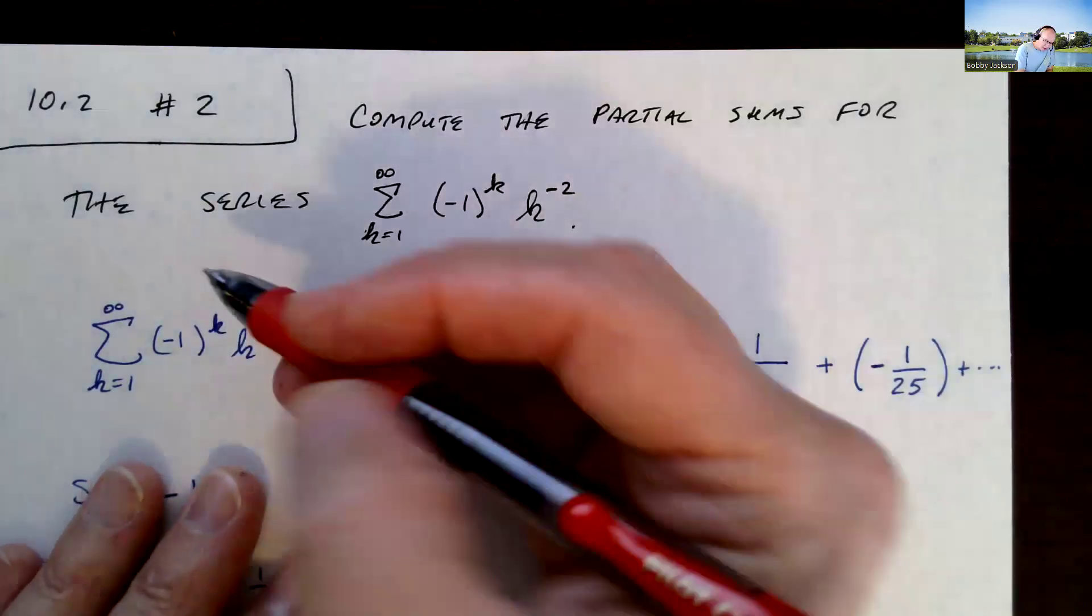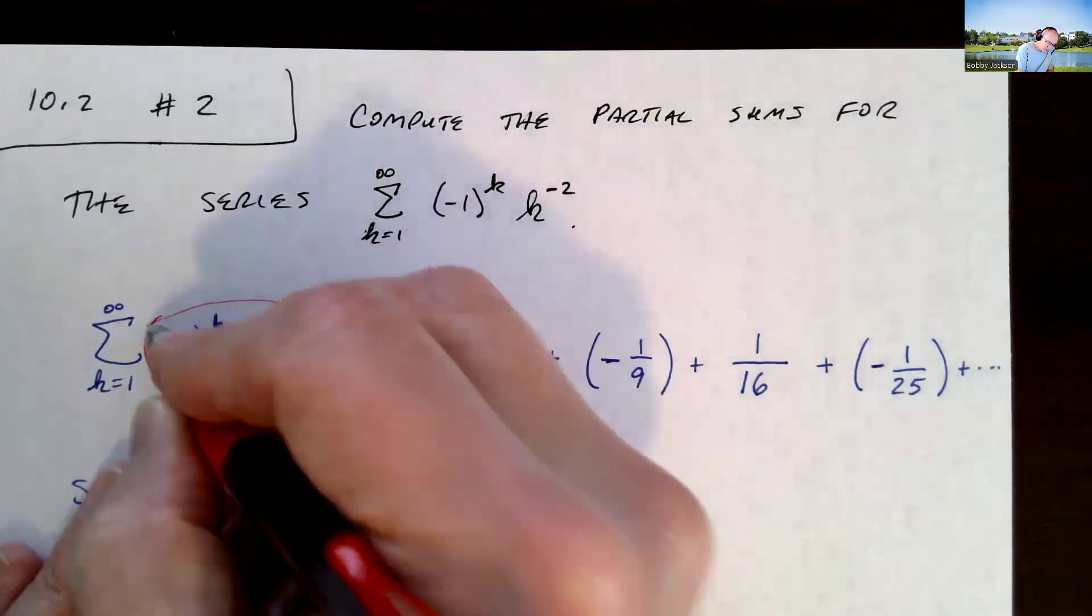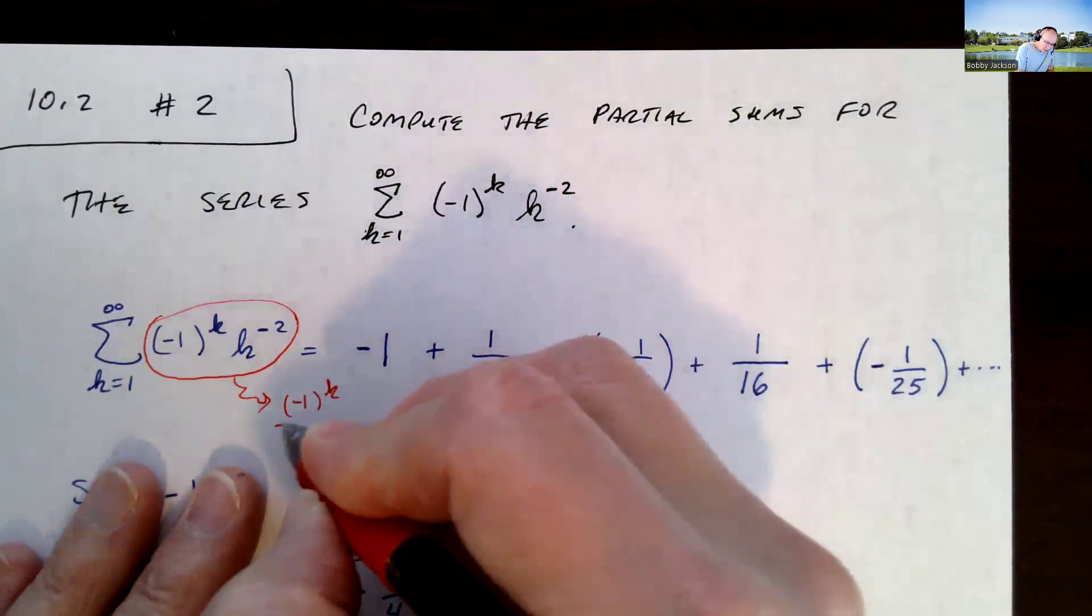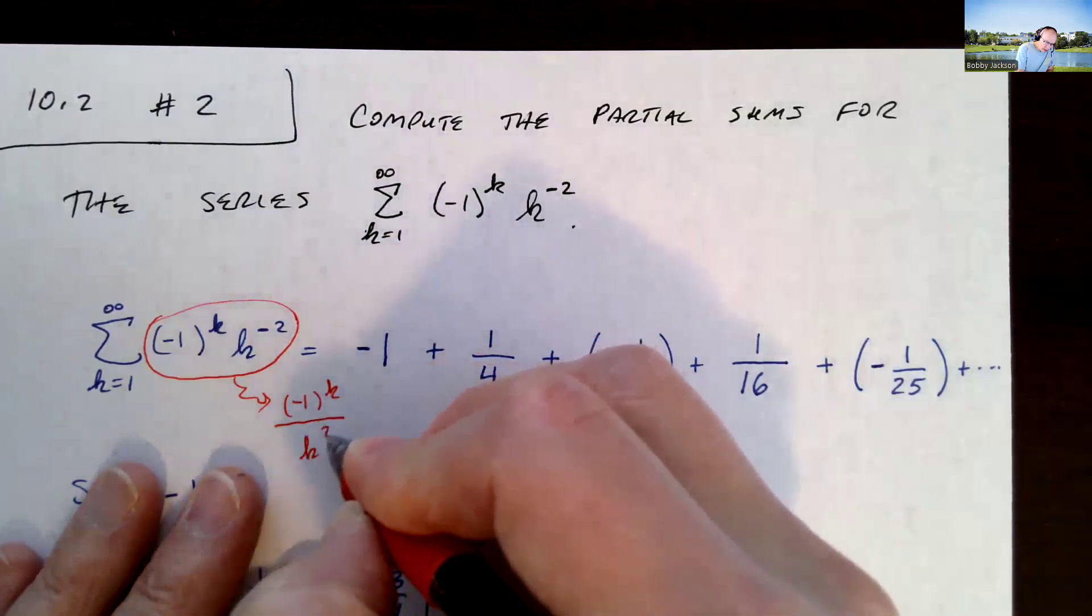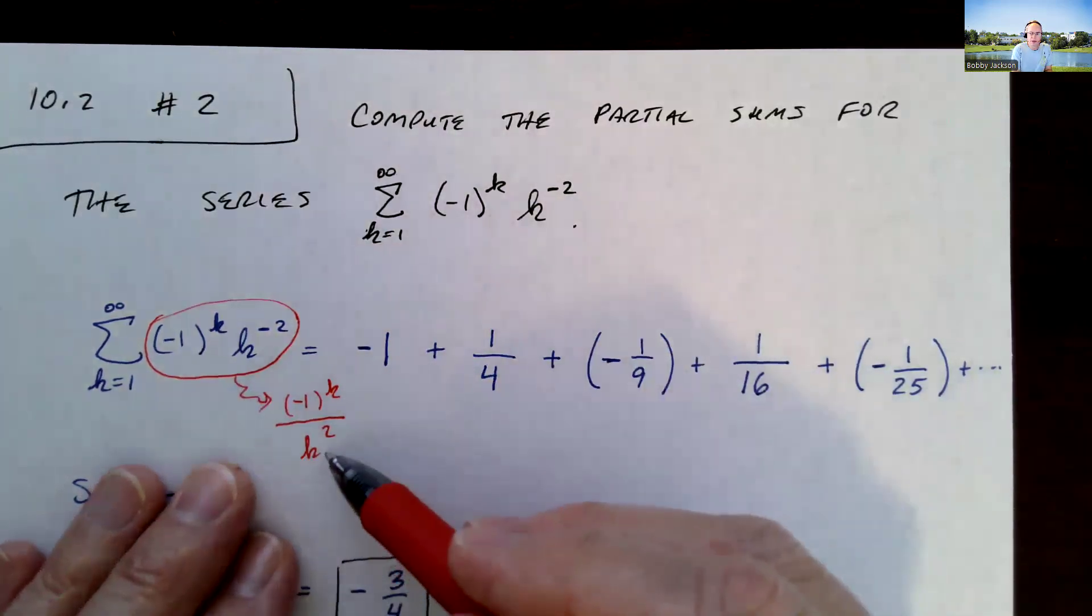And notice this thing, k to the negative 2, I could just rewrite this as negative 1 to the k divided by k squared. I'm not sure why they didn't just do that. It makes better sense to me. But it's just going to be whatever k is squared in the bottom.